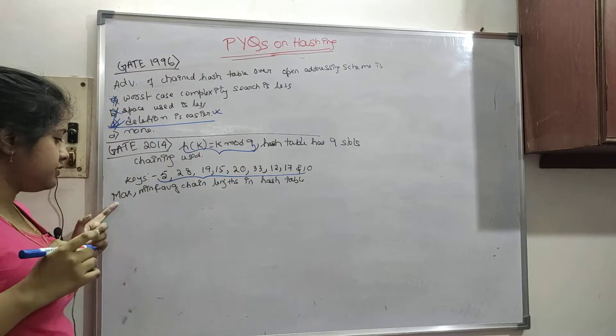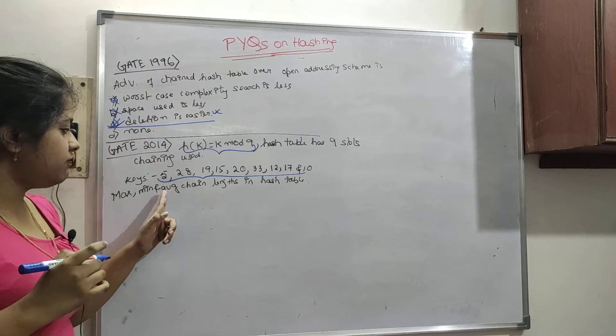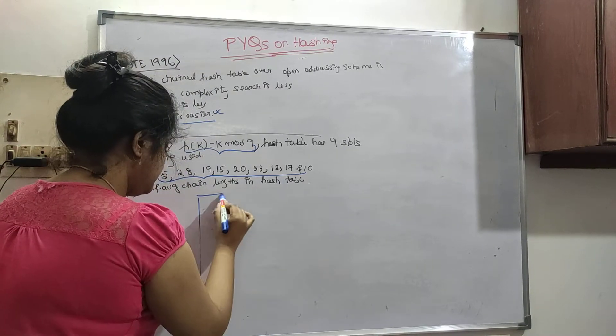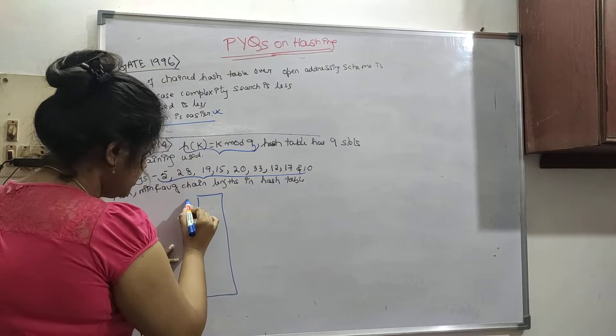We are asking, they have asked is maximum, minimum and average chain lengths in hash table. Let us do the question here.